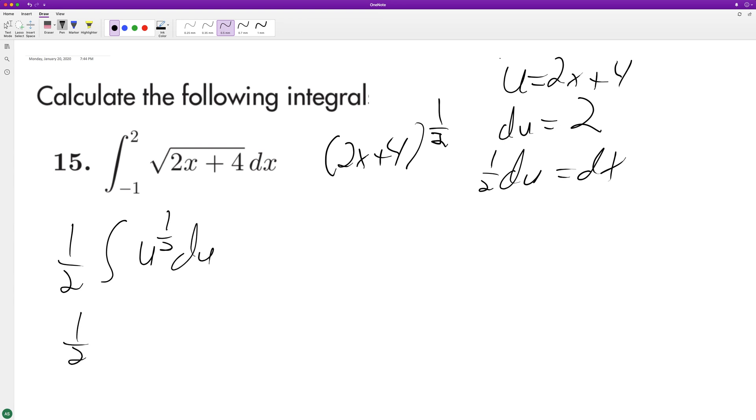We integrate, we get u raised to the 3 halves, and then multiply by 2 thirds. So it's 1 third actually. 2 thirds, 1 third.